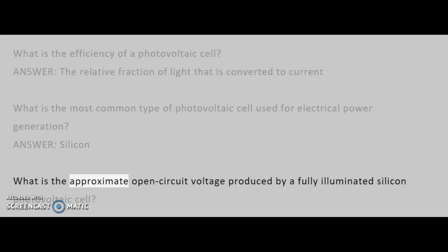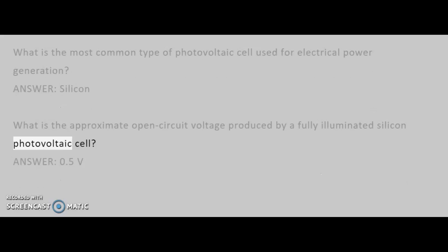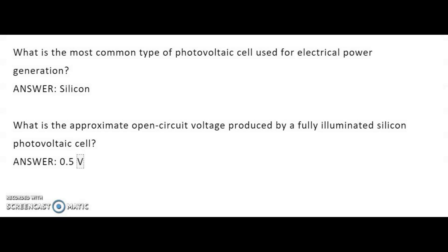What is the approximate open-circuit voltage produced by a fully illuminated silicon photovoltaic cell? Answer: 0.5 V.